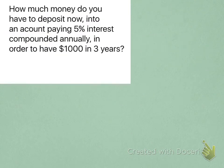Now, we're going to spice things up a little bit. We want to know how much money you have to deposit now into an account paying 5% interest, compounded annually, in order to have $1,000 in 3 years. So, the compounded annually tells you exactly which formula you need to use.